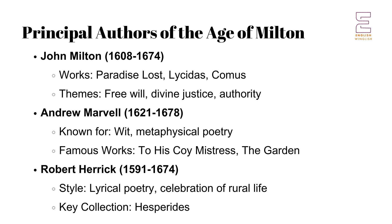Several key authors defined the literary landscape of the Age of Milton, each contributing to the rich tapestry of English literature during this tumultuous time. John Milton is the most prominent figure of this period — a poet, polemicist and intellectual whose works reflect the religious and political conflicts of his time. His early works such as Lycidas and Comus are notable for their classical influences and complex symbolism. However, it is his later work, particularly Paradise Lost, that cemented his legacy. Written after the Restoration, Paradise Lost is an epic poem that explores themes of free will, divine justice, and the nature of authority, drawing upon Milton's deep engagement with the political and religious debates of his day.